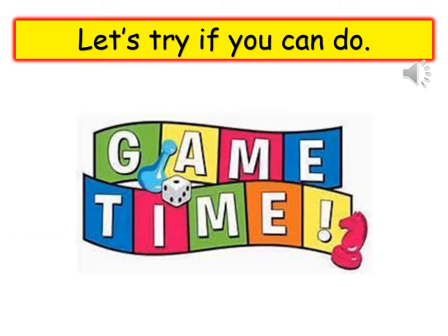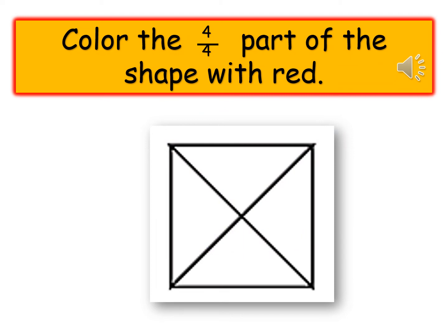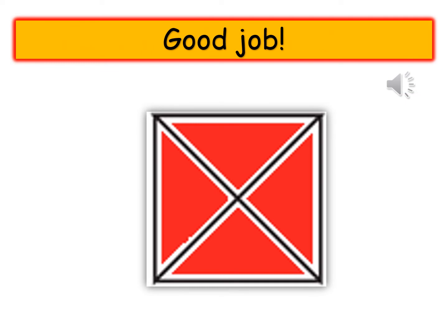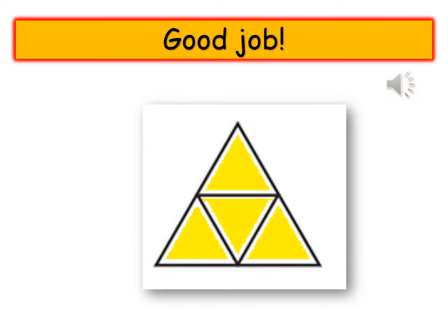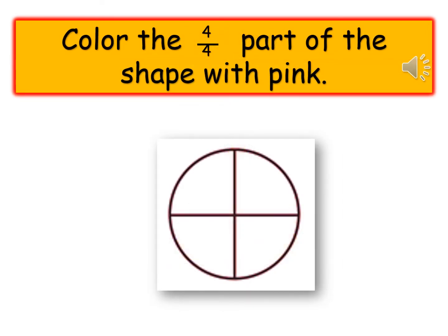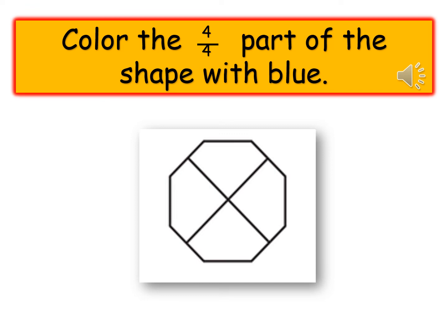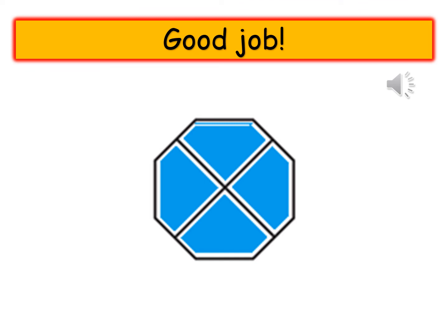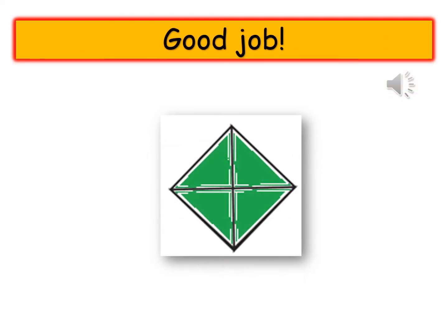It's game time! Let's try if you can do this. Color the four quarters part of the shape with red. Good job! Color the four quarters part of the shape with yellow. Good job! Color the four quarters part of the shape with pink. Good job! Color the four quarters part of the shape with blue. Good job! Color the four quarters part of the shape with green. Good job!